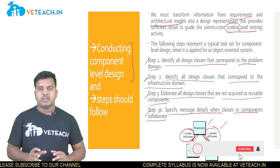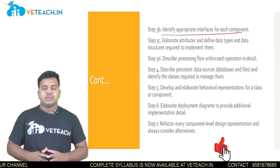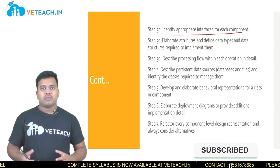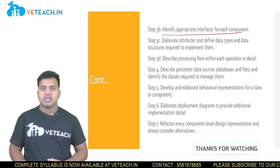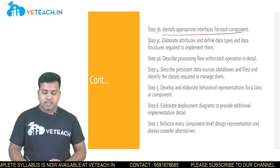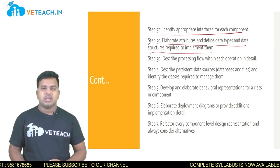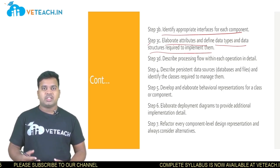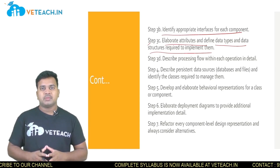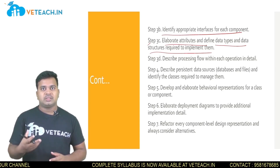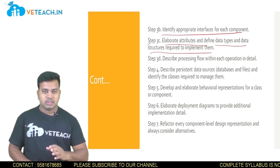The next step is to identify appropriate interfaces for each component, since any component will have a number of classes and you need a separate interface for each. After that, elaborate all attributes and define data types and data structures required to implement them — you need to clarify what data structures and data are required. A class has a class name, attributes, and operations, and this step focuses on the attributes section.